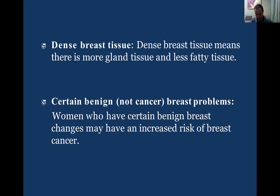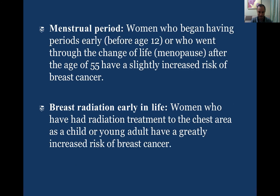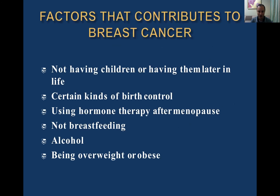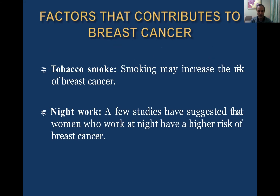Certain benign breast problems, for example diffuse or local mastopathy, may be a basis for breast cancer development. Menstrual factors include early menses or late menopause. Breast radiation early in life is also a risk factor. Other risk factors include: not having children or having them late, certain kinds of birth control, hormone therapy after menopause, not breastfeeding, alcohol, being overweight, tobacco smoke, and night work due to elevated estrogen levels.